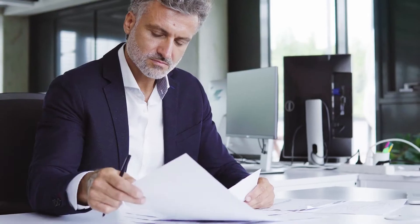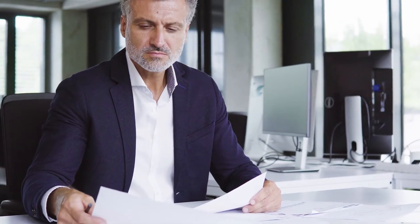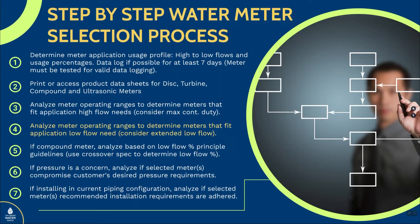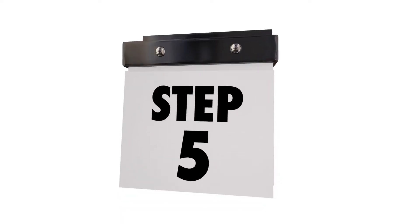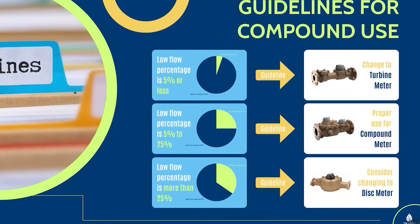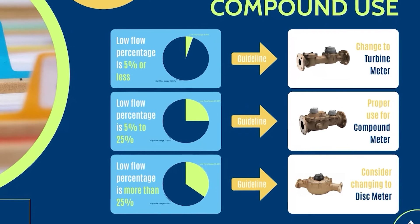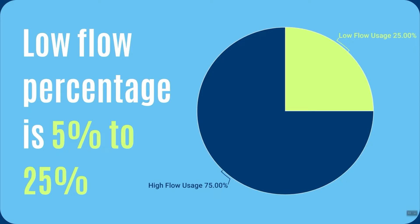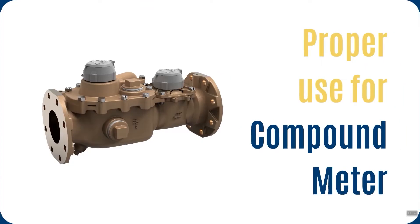Step four: analyze the meters you've selected for high flow conditions against the low flow and intermediate flow needs. Take those meters and pare them down — maybe you've selected three meters that could fit this application, but which ones fit the low flow capabilities? The fifth step is if you have compound meters selected, analyze those according to the compound low flow principle. Look at the crossover point to determine what runs on the low side versus the high side, and see if the compound meter is running between 5 and 25% on its low flow side. If not, choose one of the other meters.